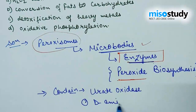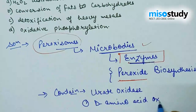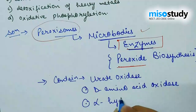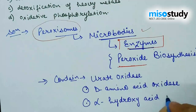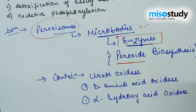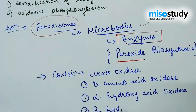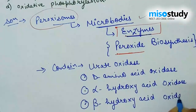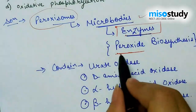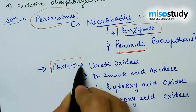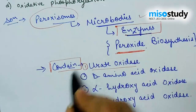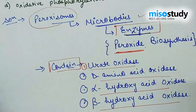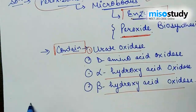The peroxide-producing enzymes in peroxisomes include: urate oxidase, D-amino acid oxidase, alpha-hydroxy acid oxidase, and beta-hydroxy acid oxidase. When we discuss about peroxisomes in animal cells, these enzymes are basically focused for peroxide biosynthesis — containing urate oxidase, D-amino acid oxidase, alpha-hydroxy acid oxidase, and beta-hydroxy acid oxidase.